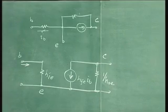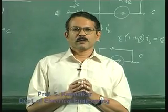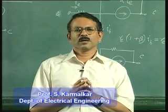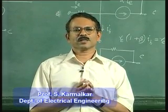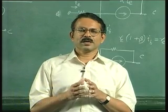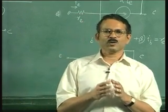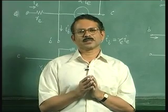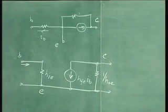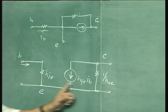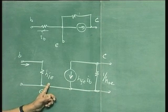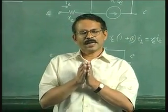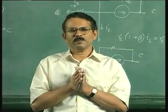Some students may have doubts about the H parameters. These H parameters are discussed in your networks and systems course, so please review the material related to H parameters there if you have some difficulty about this system of H parameters used to represent the input and output relations of any system. Otherwise, you understand how from physical considerations you can get this equivalent circuit — how you can develop this equivalent circuit starting from the basic operation of the transistor, and also how you can develop the same equivalent circuit from the terminal characteristics.